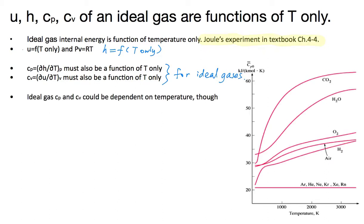However, for an ideal gas, the constant volume specific heat and constant pressure specific heat may be dependent on the temperature of the gas. For most gases, the specific heat actually increases with increasing temperature. As we can see from this figure on the right of the screen, carbon dioxide, water vapor, oxygen, hydrogen, and air — their specific heats all increase with increasing temperature.